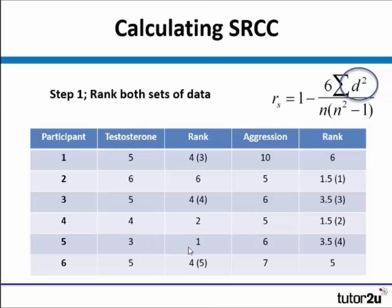We then have three scores of 4, which would take ranks 3, 4, and 5. Because there are three of them, they have to have the same rank, and the middle number would be 4, so they all get 4, which then leads 6 to take the rank of 6. Over here, in terms of aggression, the same principles apply.